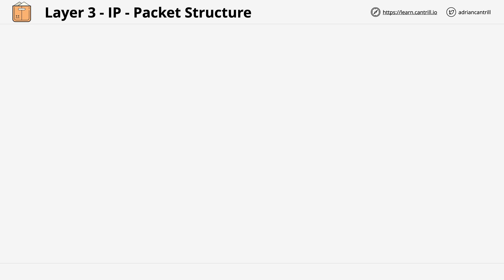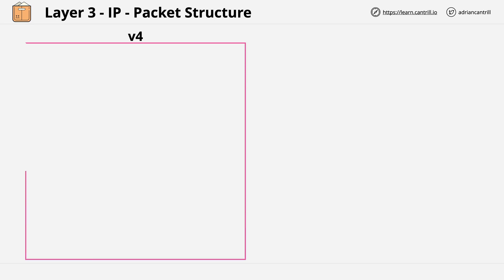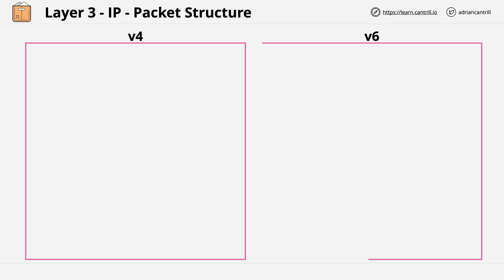There are two versions of the Internet Protocol in use: version 4, which has been used for decades, and version 6, which adds more scalability. I'll be covering version 6 and its differences in a separate lesson.